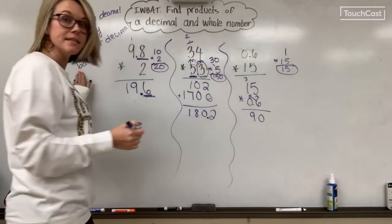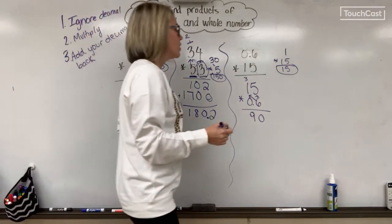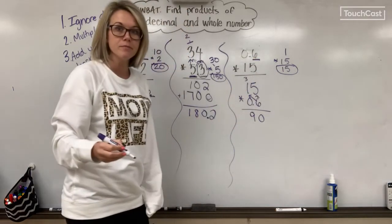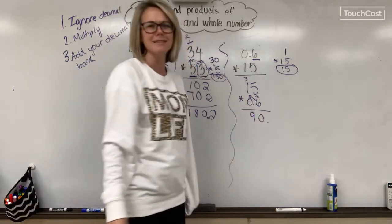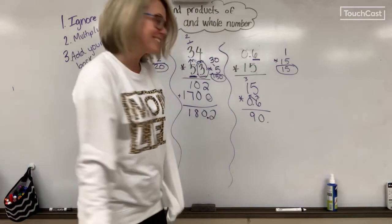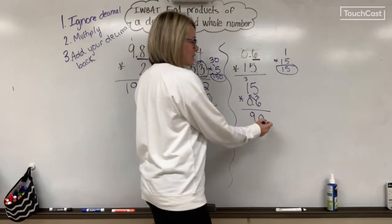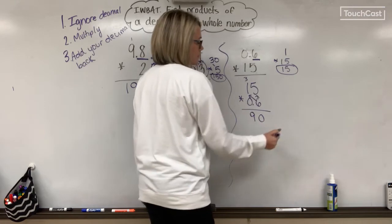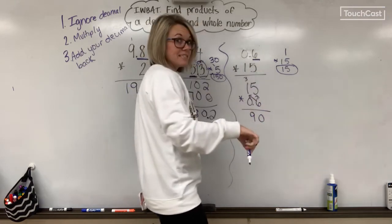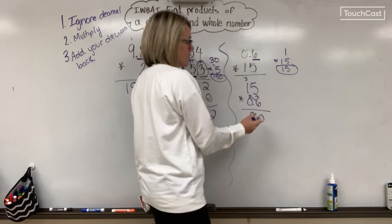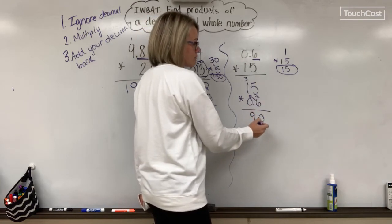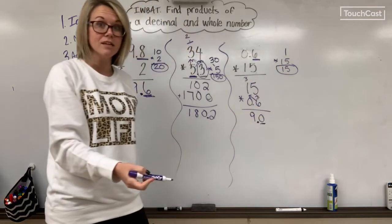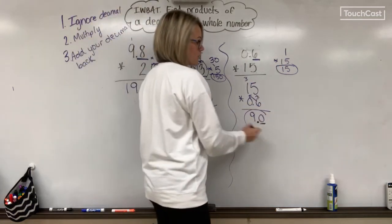Now I have to add my decimal back in. I know my answer has to be close to 15, and I know it should end in the tenths place. If I place my decimal here, I don't have any numbers behind, so there's no tenths, and 90 is not close to 15. In fact, I know my answer should be less than 15 because I rounded up. If I place my decimal here, I have 9.0. 9 is less than 15 but still relatively close. So my final answer would be 9.